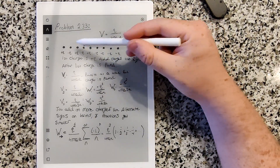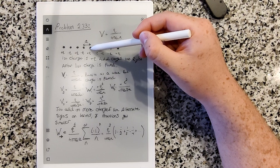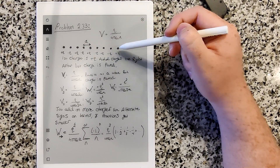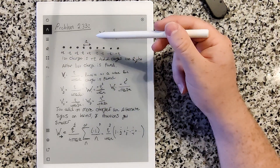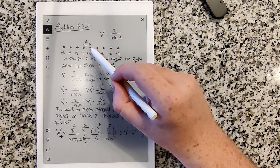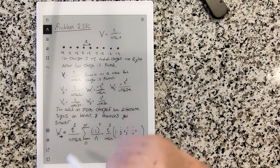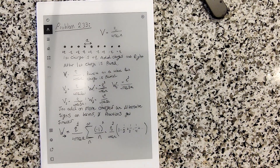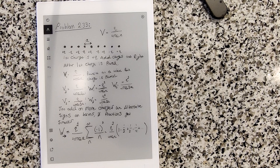I've drawn this situation out here — this is going to be the center charge. The charges extend to infinity in both directions and just alternate signs: +q, -q, +q, -q, and so on. So let's think about finding the work per particle — if we want to bring another particle in, we need to know the total potential of this configuration.